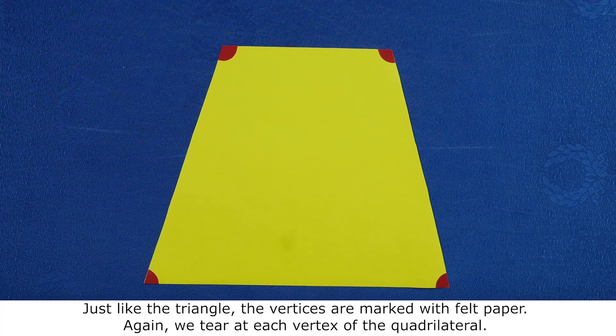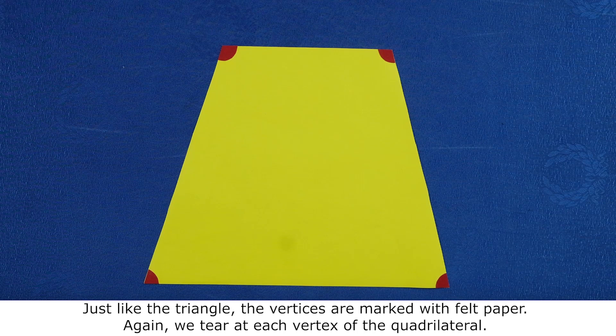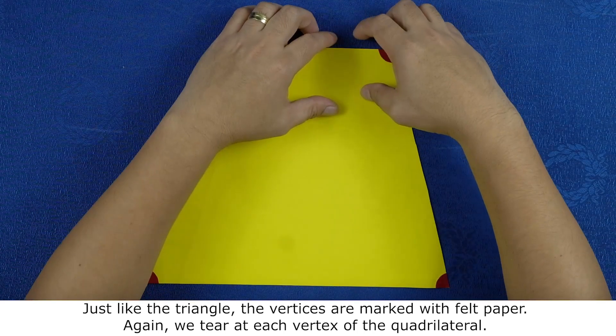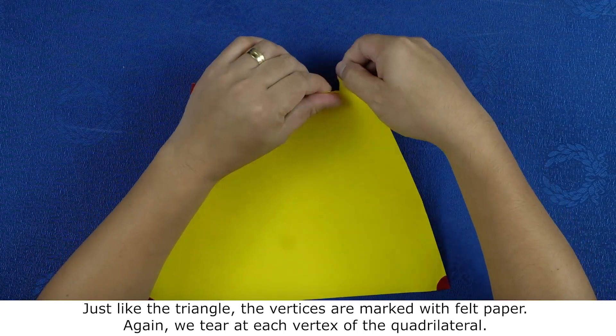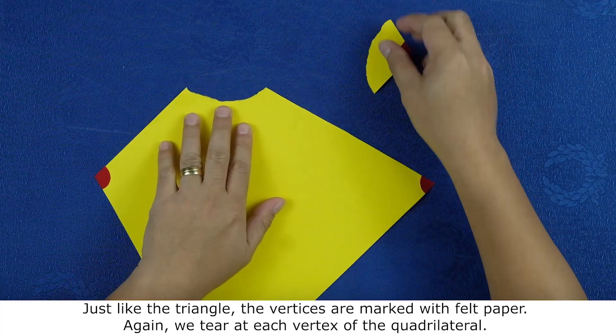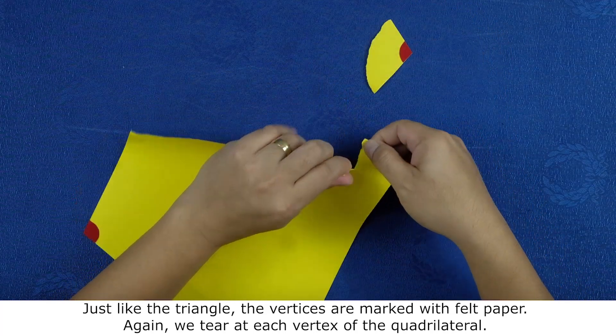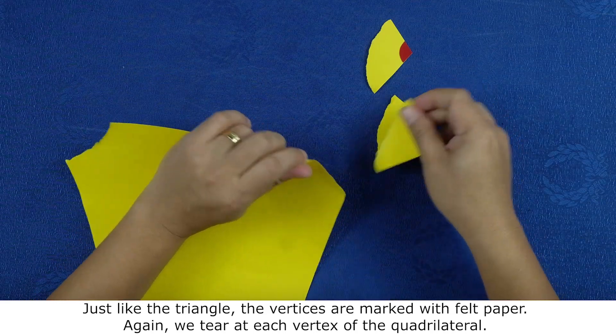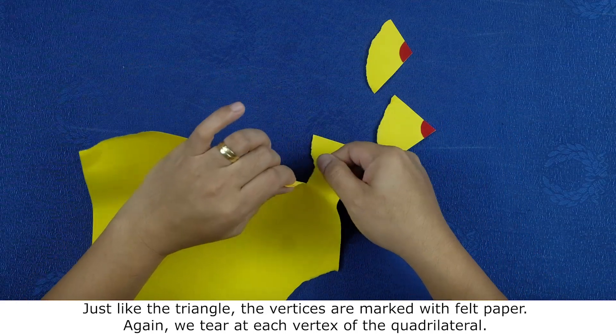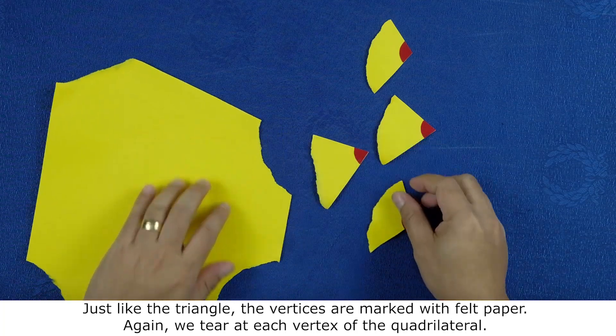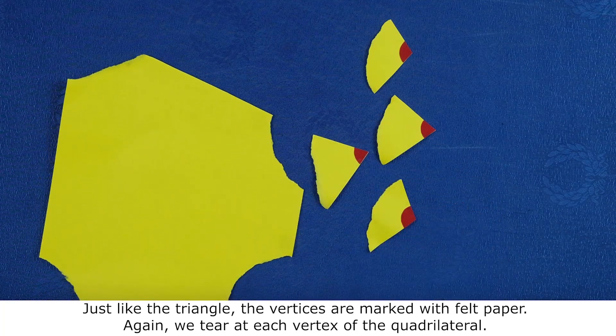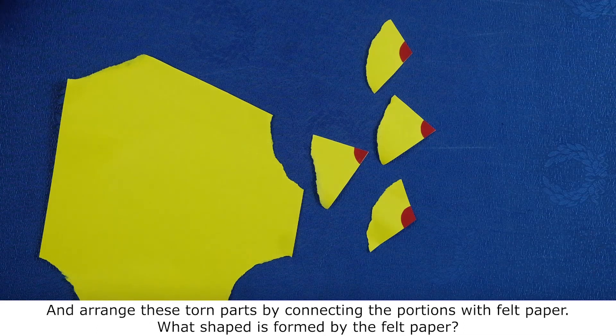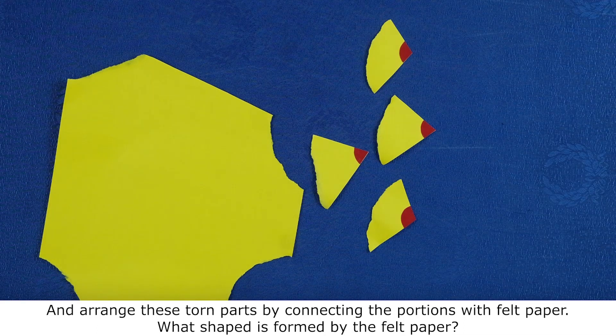Again, we tear at each vertex of the quadrilateral and arrange these torn parts by connecting the portions with felt paper.